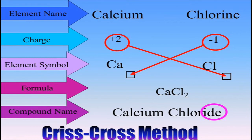For example, we have to write the molecular formula of calcium chloride. The elements present in calcium chloride are calcium and chlorine. The symbol for calcium is Ca, for chlorine is Cl. The charge on calcium is +2 and on chlorine is -1. Here we exchange the charges by the crisscross method, and we get CaCl₂. Therefore the molecular formula of calcium chloride is CaCl₂.